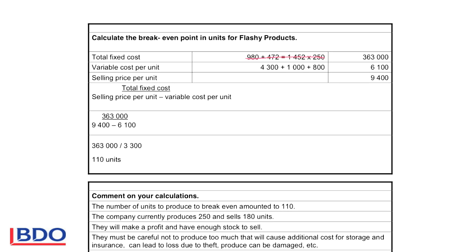Then we take the variable costs and we add all the figures that was given to us and we get our total cost. And they told us that the selling price per unit is 9,400.